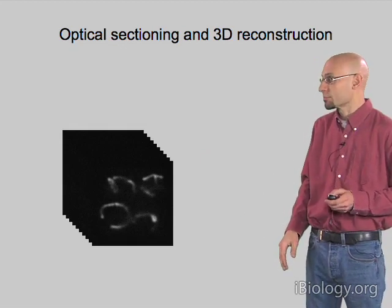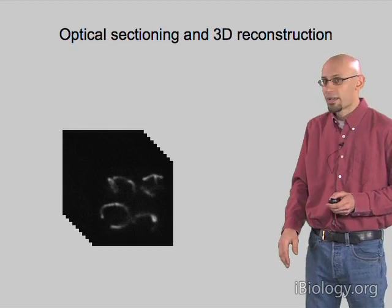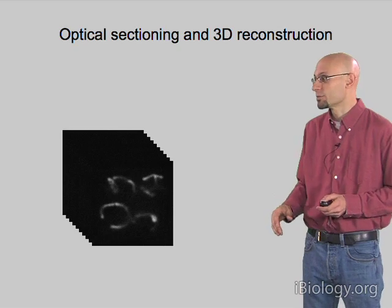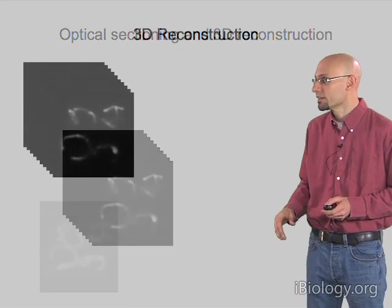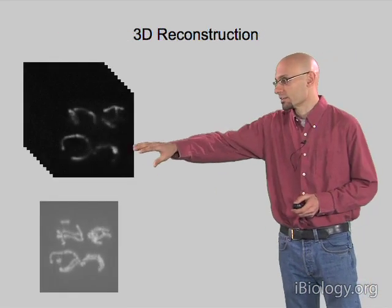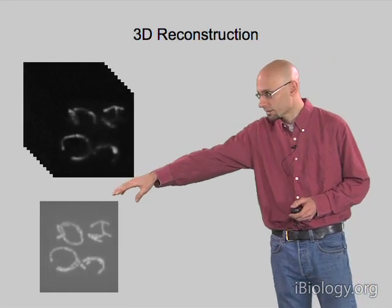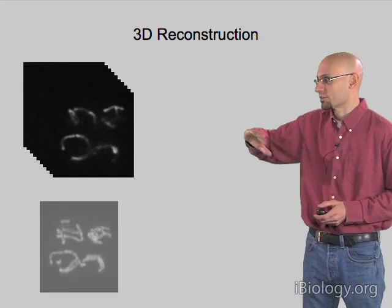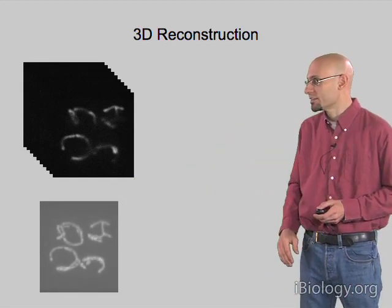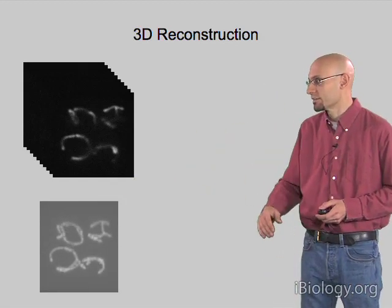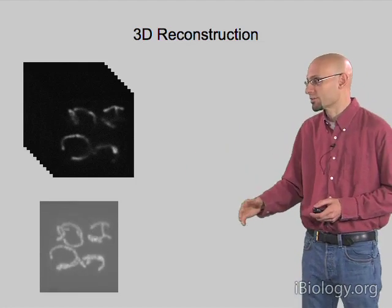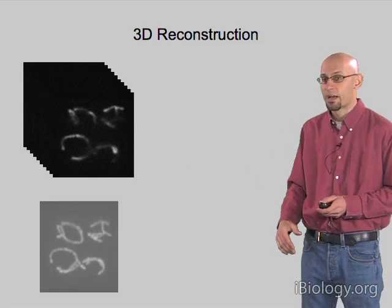We can now take this in a computer and have the computer calculate what this structure would look like as viewed from different angles — that's how we get these kind of movies. I'm showing here a rotation around the axis of these two yeast cells, so you can now, from this set of 2D images, appreciate their three-dimensional structure and layout.